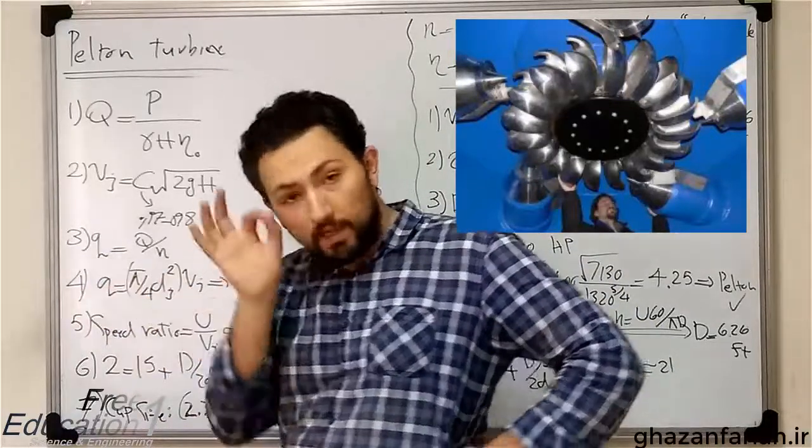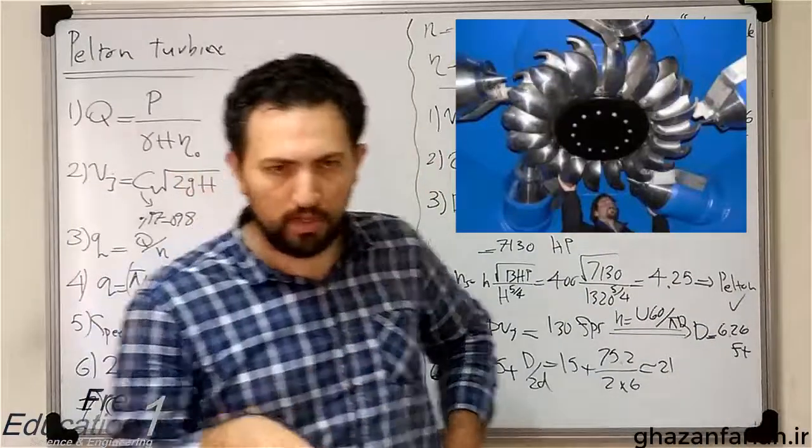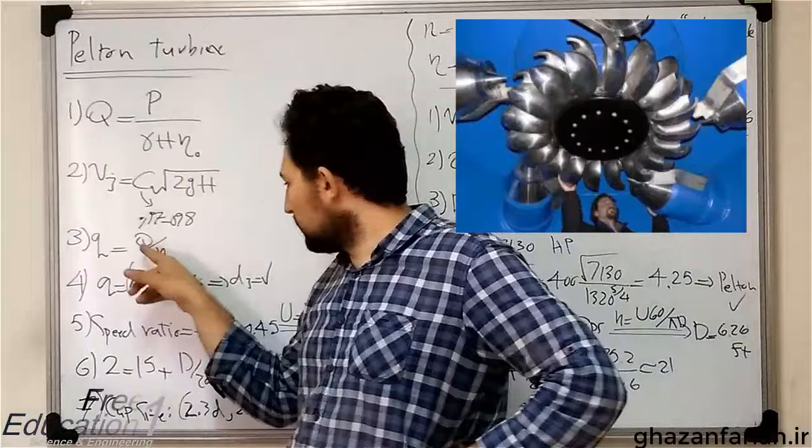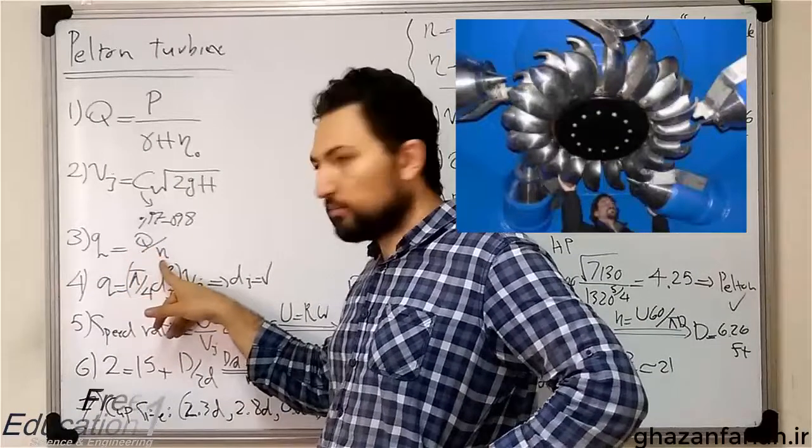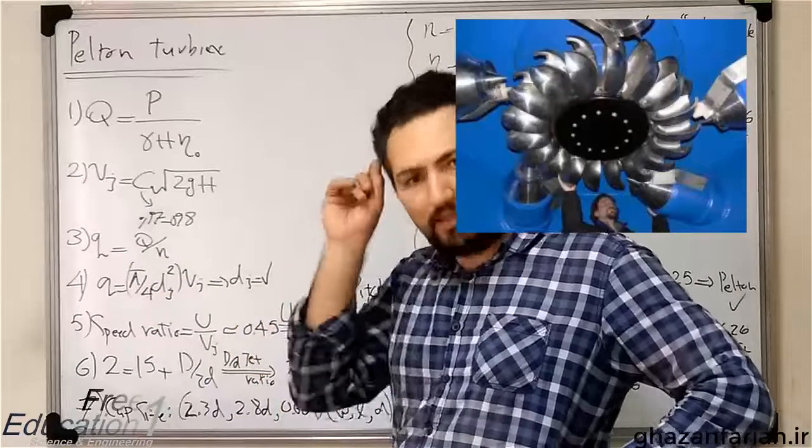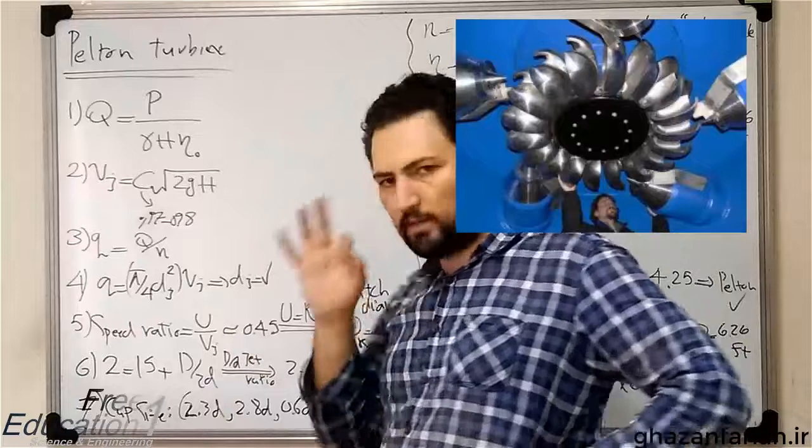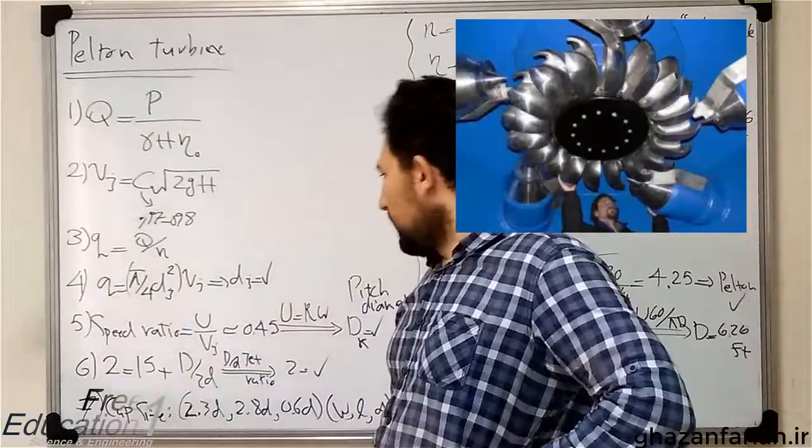The third layer relation computes the flow rate of each nozzle. If you have more than one nozzle in the turbine, you have to divide the overall flow rates by the number of nozzles. So, you can compute the capacity of each nozzle or the flow rate of each nozzle, which is shown by Q.